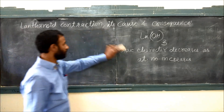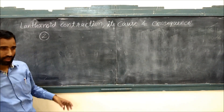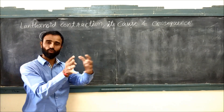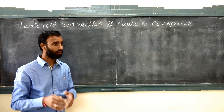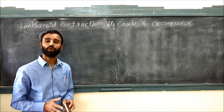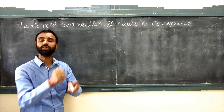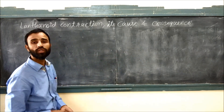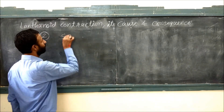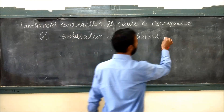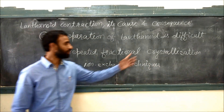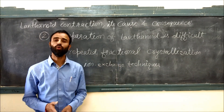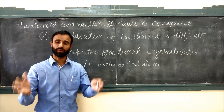The second consequence is that because their atomic or ionic radii are very close to each other, their chemical properties are almost similar. Therefore, they are difficult to separate. Separation of lanthanoids is difficult, and repeated fractional crystallization and ion exchange techniques are used to separate them.